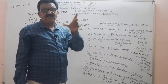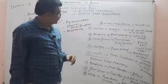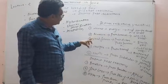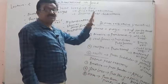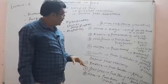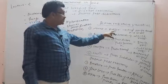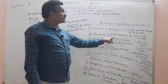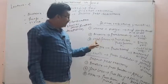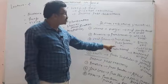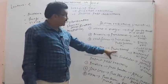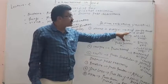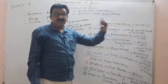Disease resistant varieties have been developed in wheat, Brassica, cauliflower, and cowpea. The Himgiri wheat variety, Pusa Swarnim Brassica variety, Pusa Shubra and Pusa Snowball K1 cauliflower varieties, and Pusa Komal cowpea variety are the main ones. Himgiri wheat shows resistance against leaf stripe rust (a fungal disease) and hill bunt disease.